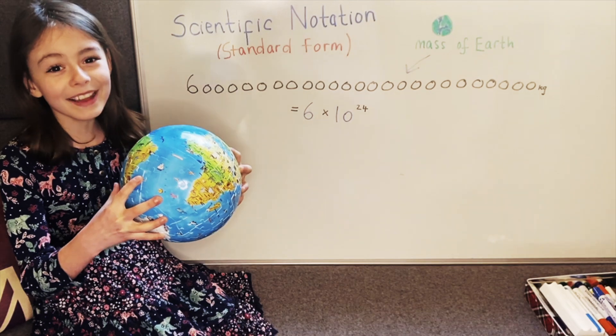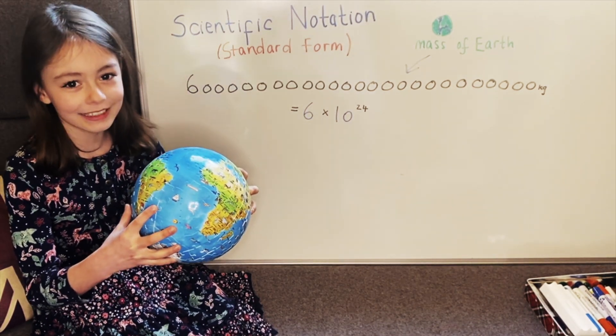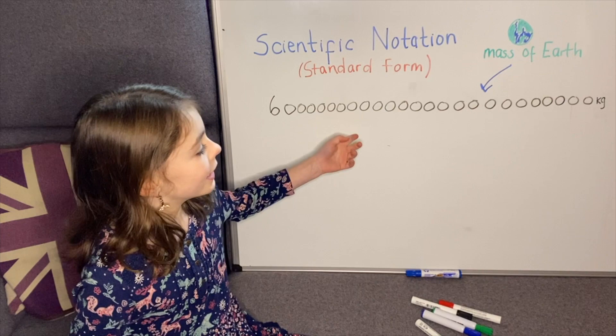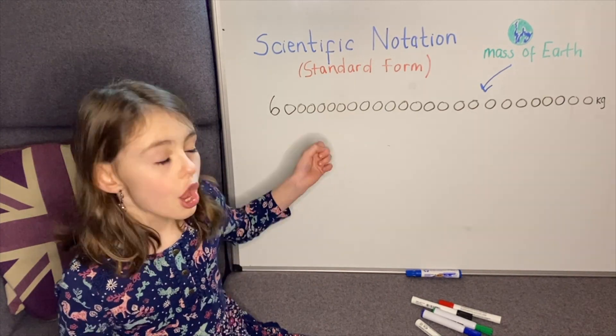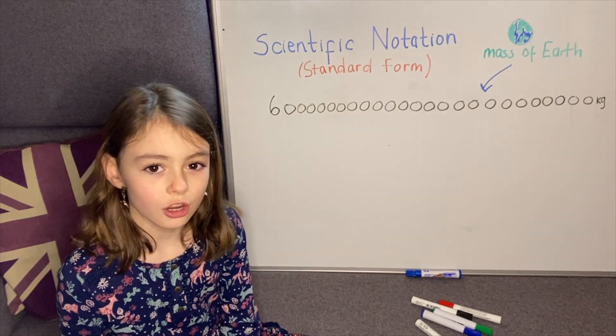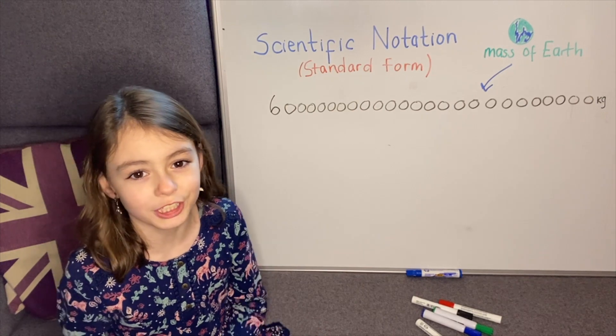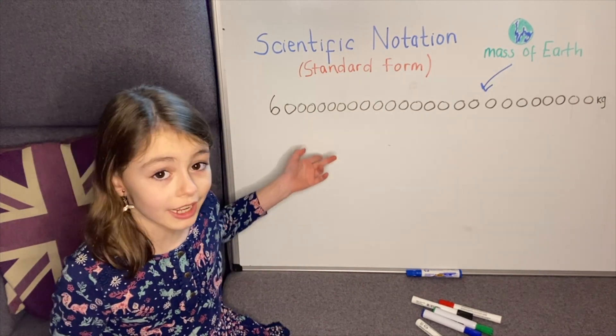The mass of planet Earth is approximately six septillion kilograms. I've written it down here, and at a glance could you spot how many zeros there are? Unless you're some sort of genius, you'll find it quite hard to do with just one glance.